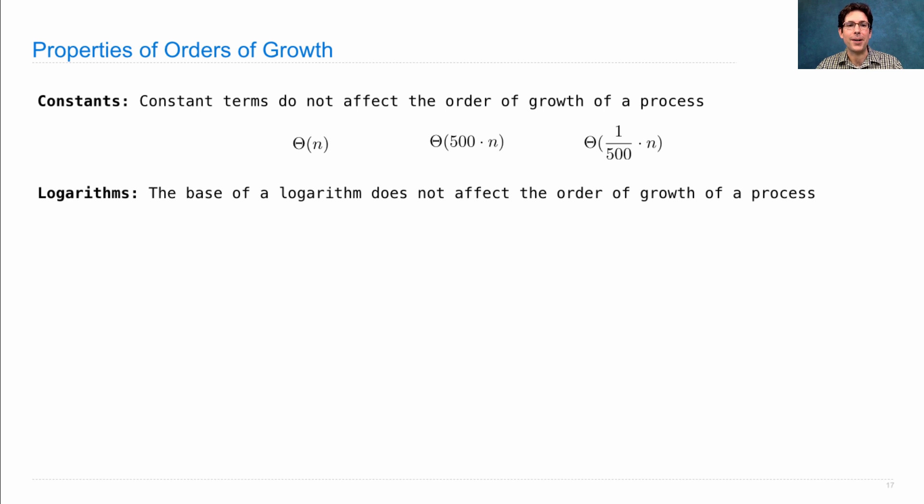Logarithms, as we saw in the exponentiation example, sometimes appear. And the base of the logarithm actually doesn't matter. It does not affect the order of growth of a process. So log base 2 of n is the same as log base 10 of n. It is the same as the natural logarithm of n.